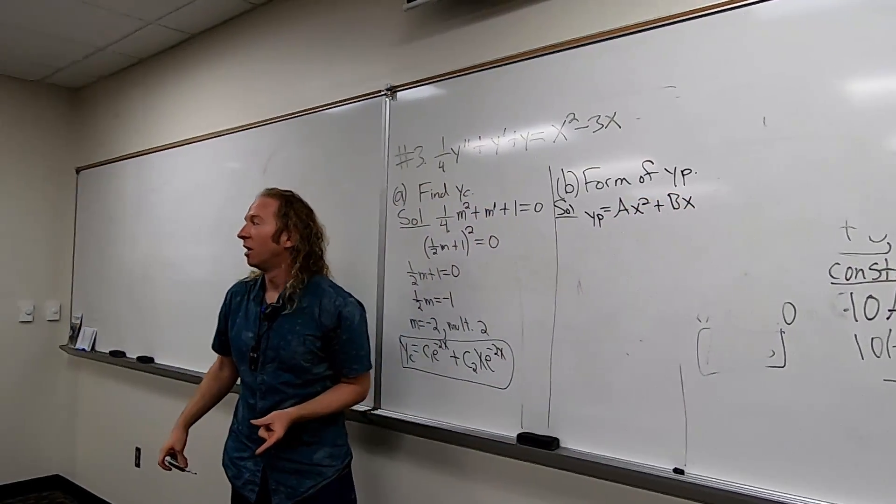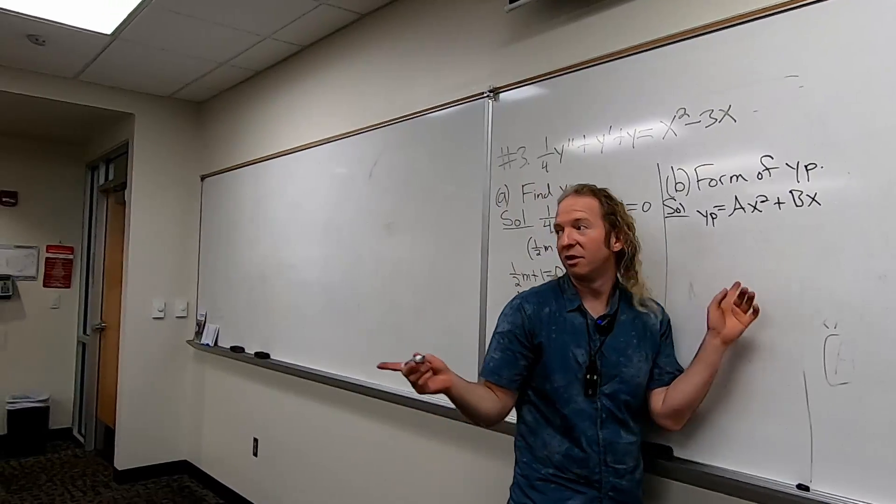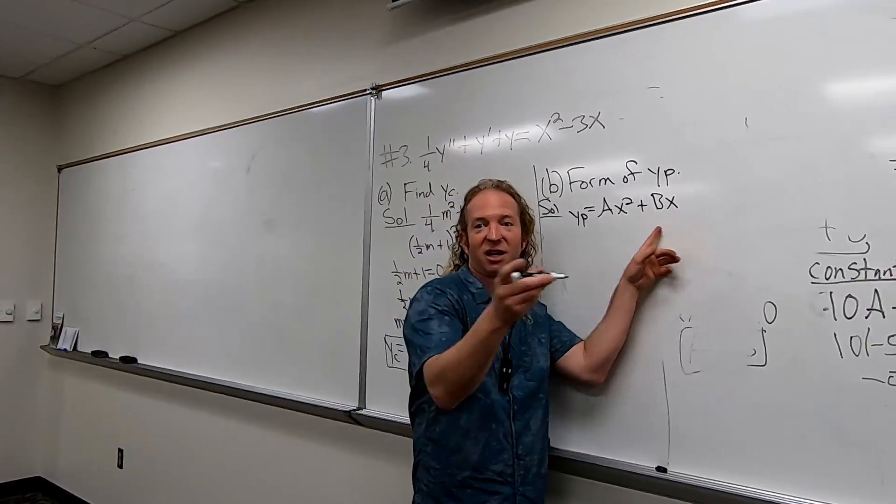So our initial guess will just be AX squared plus BX. Is that it or is there more? Could it be minus BX? No, it's plus. What's missing? The C.